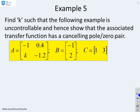Example 5. Find K such that the following example is uncontrollable and show that the associated transfer function has a cancelling pole zero pair. So the first thing to do is obviously define the controllability matrix. So MC equals BAB. There's only two states. We only need two terms.